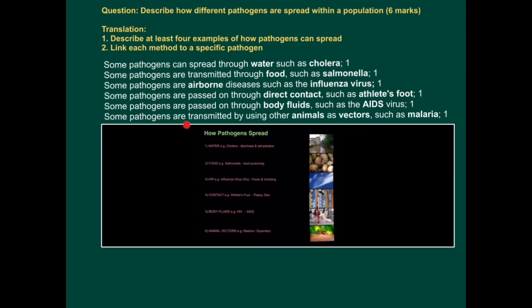Some pathogens are transmitted by using other animals as vectors — animals which carry the pathogen and can infect other hosts. For example, malaria.